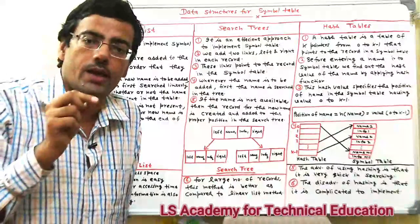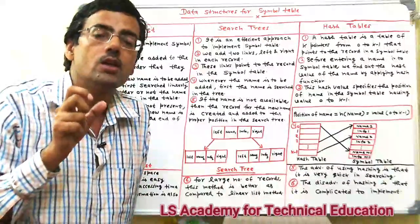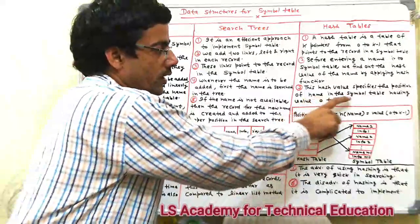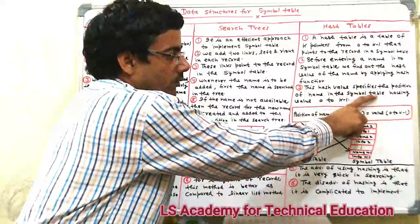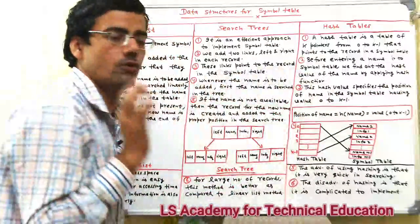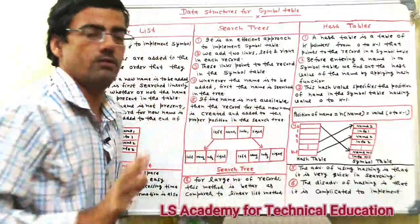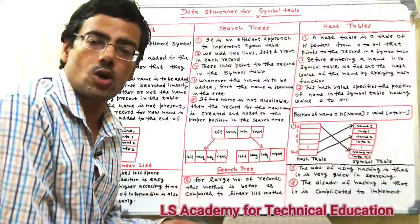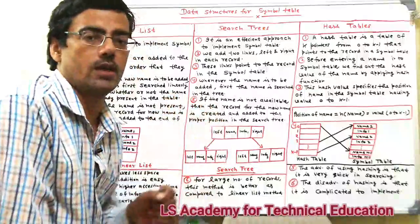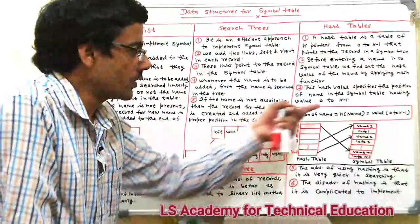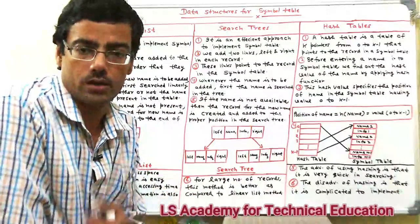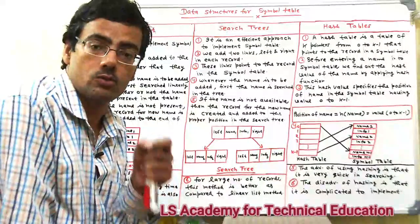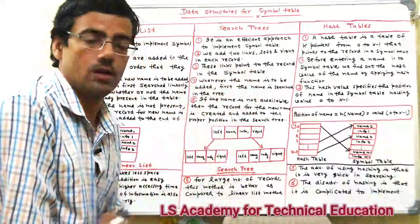The integer value produced by applying the hash function specifies the position — it indicates where to save the record. The hash value falls between 0 and k-1. By storing the position at insertion time, when we search later we only need to apply the hash function, and we immediately know where the name is stored. So retrieval is very efficient. The hash table is the most commonly used data structure for the symbol table.